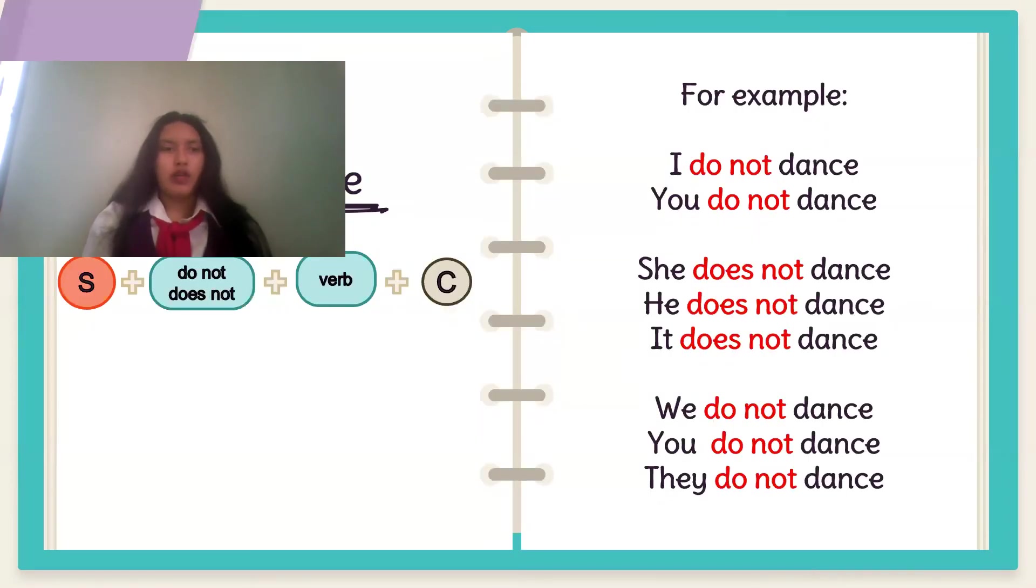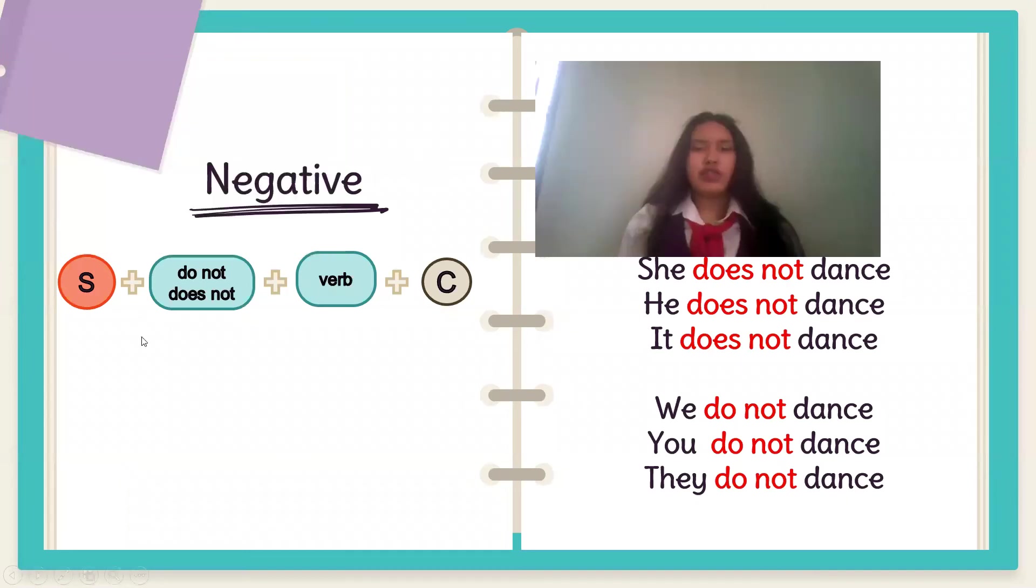When you choose the negative, the only difference is you use an auxiliary in negative. The auxiliary negative is do not and does not. You use do when you talk about a plural. You use does when you talk about a singular.